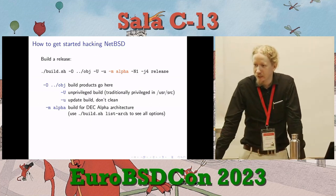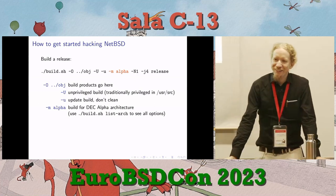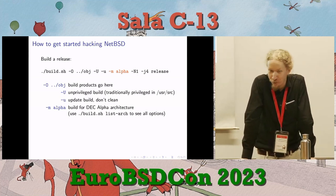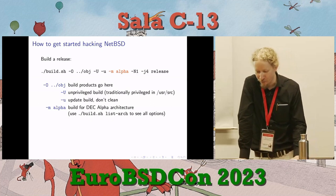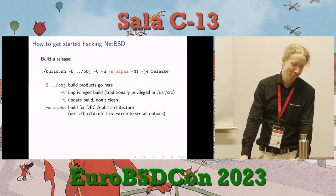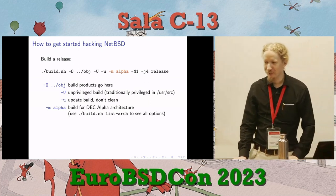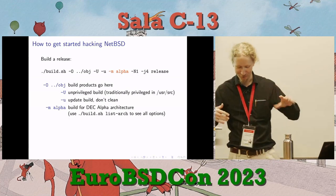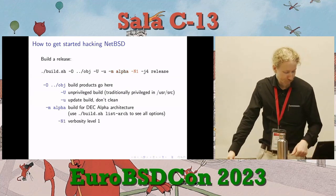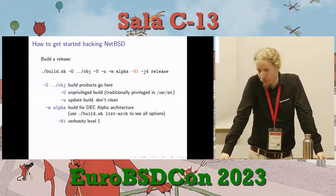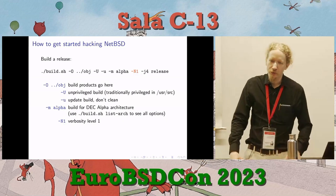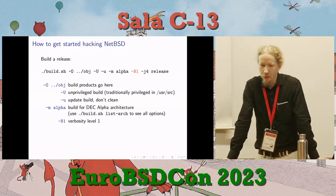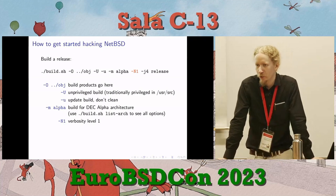-m alpha says build for the Alpha architecture. You can cross-build NetBSD for VAX if you want — use build.sh list arch to see all the options. There are a lot, especially for ARM and MIPS with different ABIs and variants. -N1 changes verbosity to level 1 — it'll just say 'compile foo.c' without showing the whole command line. You can use -N2 for full command lines, -N3 for more, or -N0 for quiet builds. You'll want to do parallel builds since everyone has multiple CPUs these days.